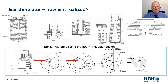Two examples of a simplified pinna simulator with a control leakage are taken from ITU P.57 and are shown on the slide. To the left, a pinna simulator with high leakage, and to the right one with low leakage. The two different leakages are simulating a handset held loosely against the ear and a handset held firmly against the ear. In both cases, the 711 coupler is attached to the pinna simulator.